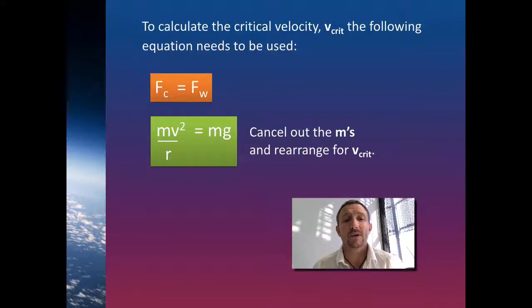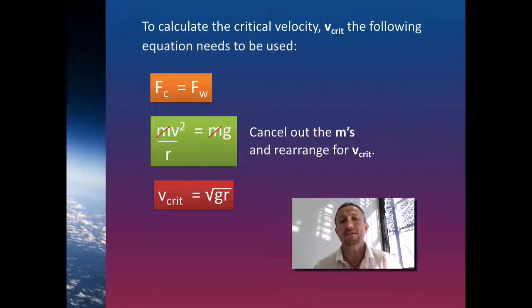Now we can cancel out the m's on both sides and then rearrange it so that we get v as our final value. Now this will be our critical velocity. This will be the value that we need at a specific height and that specific height will be the radius of the earth plus the height that we need to put it into orbit. So we get our critical velocity will be calculated using the square root of gr.